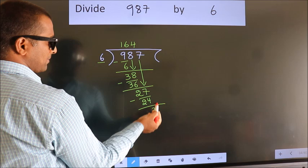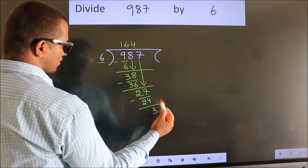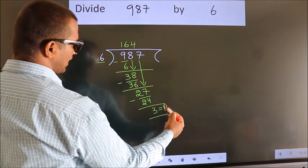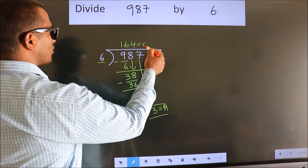No more numbers to bring down, so we stop here. This is our remainder. This is our quotient.